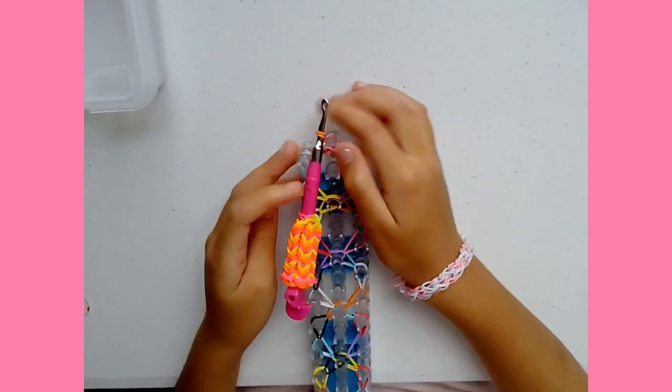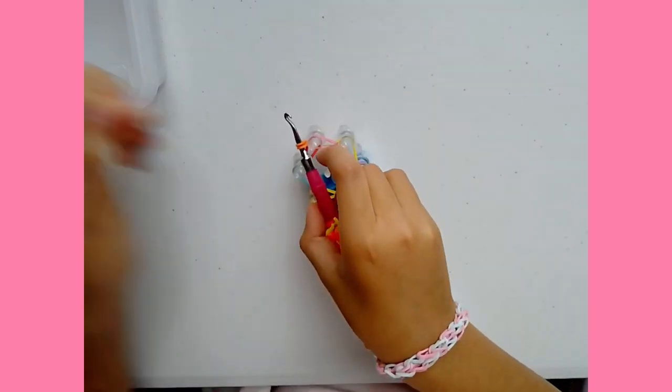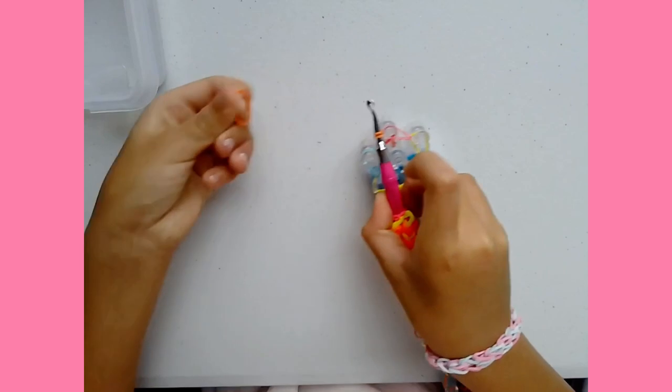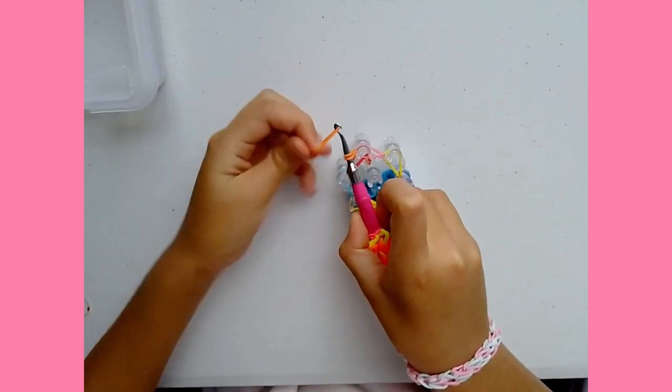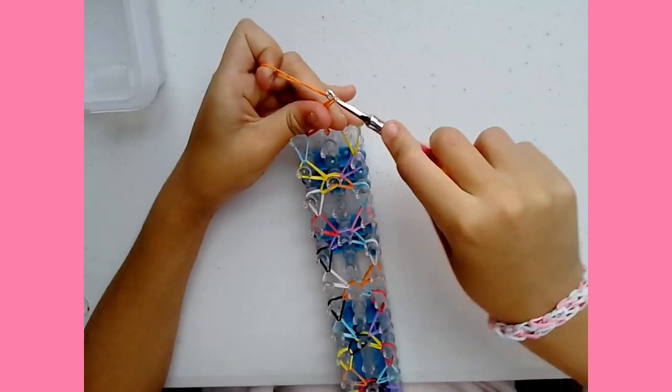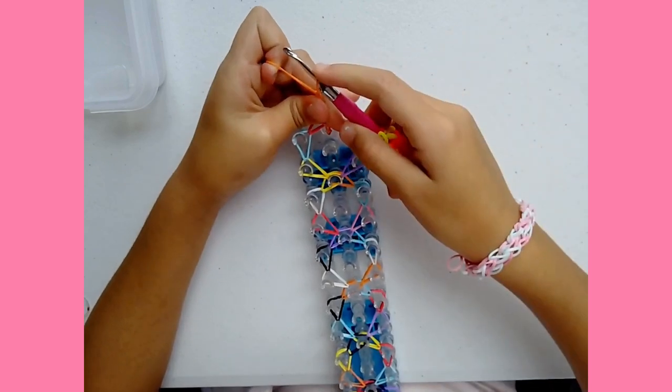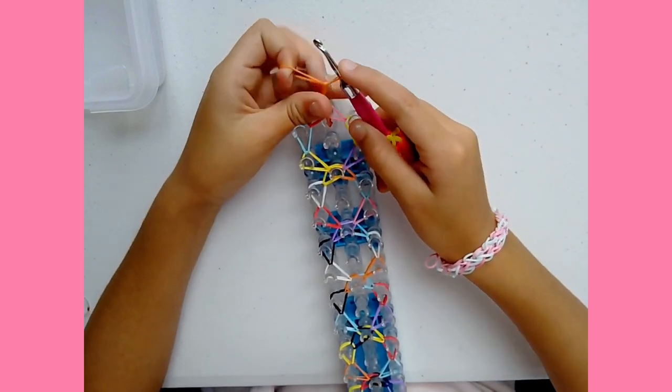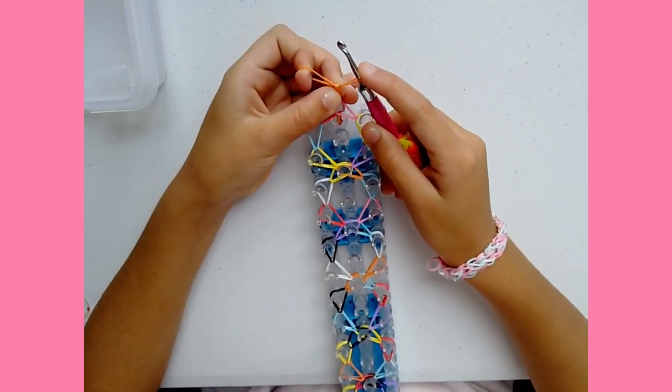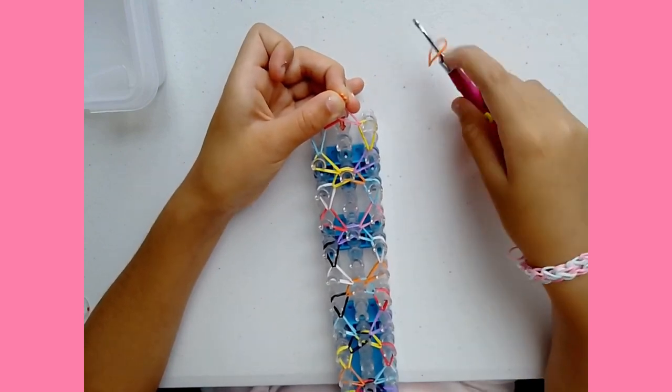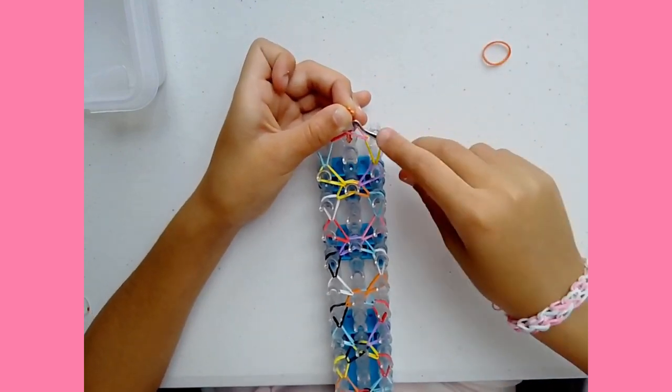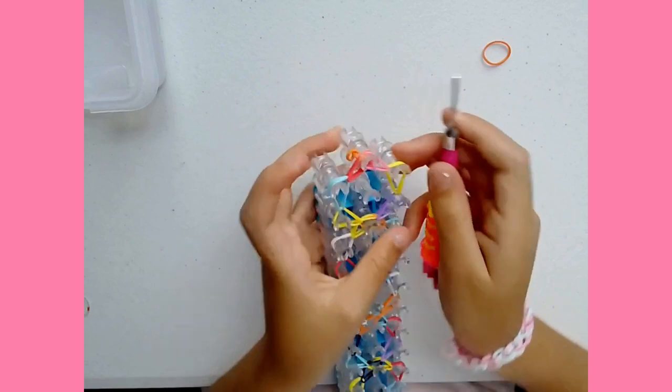Then if this size doesn't fit you, you can do an extension. Just grab whatever color you want, put it on your hook, and pull it right through like that. But this actually fits me really well, so I'm going to figure out how it is.